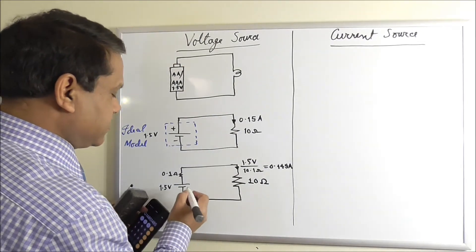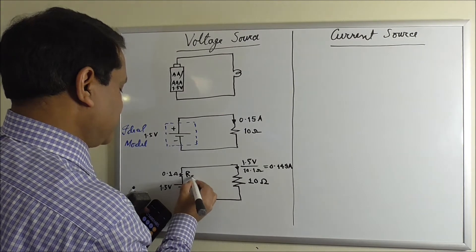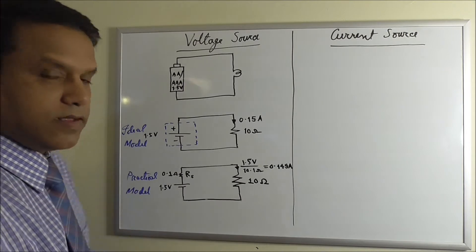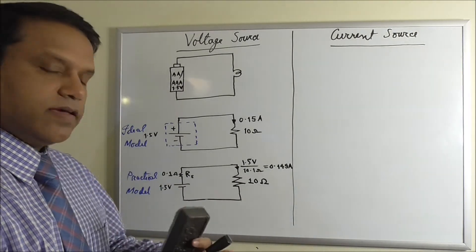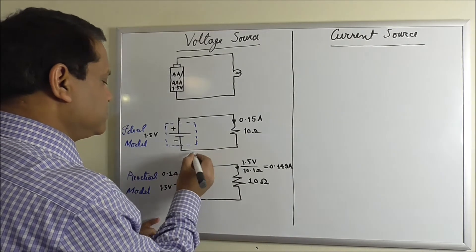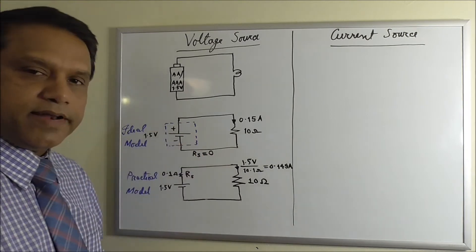It is called internal resistance or series resistance. You can call it RS. This is the practical model. So for an ideal battery, RS is 0.